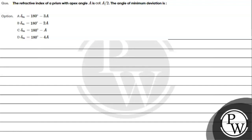Hello everyone, let's read the given question. The question says: the refractive index of a prism with apex angle A is cot(A/2). The angle of minimum deviation is: